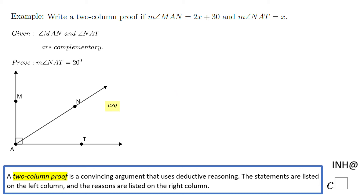Welcome, or welcome back, at C-squared. In this example I'm going to write a two-column proof and then a flowchart for this geometrical proof. It is given that angle MAN and angle NAT are complementary, and we can see that in the picture because we see a right angle. We need to prove that the measure of angle NAT equals 20 degrees.